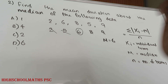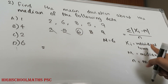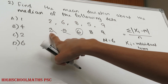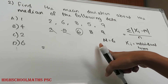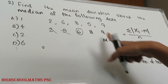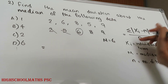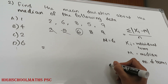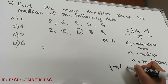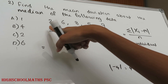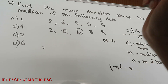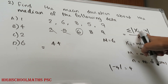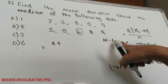We compute each term x_i minus m, which means x_i minus 6. For the first term, 2 minus 6 gives minus 4. The modulus of minus 4 is 4. We continue this for each value, adding 5 and 6 as well.